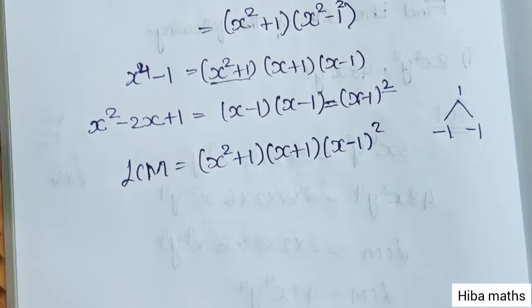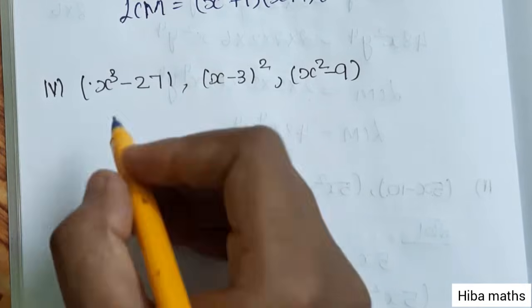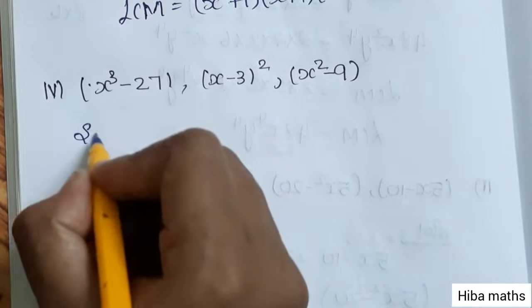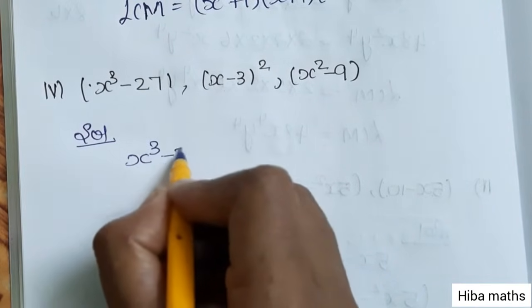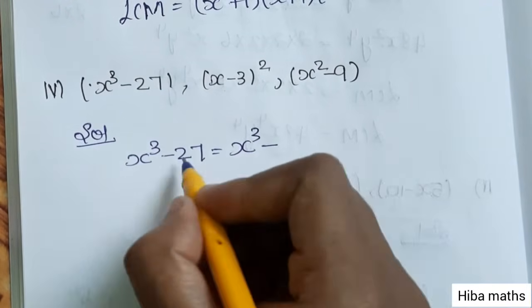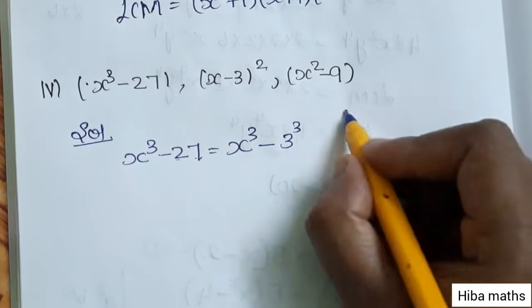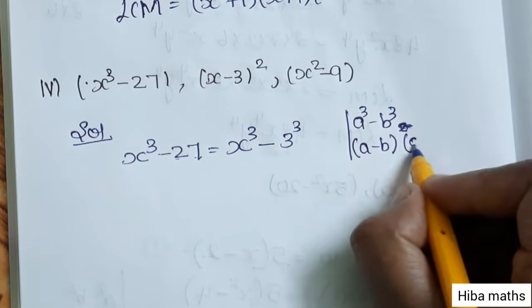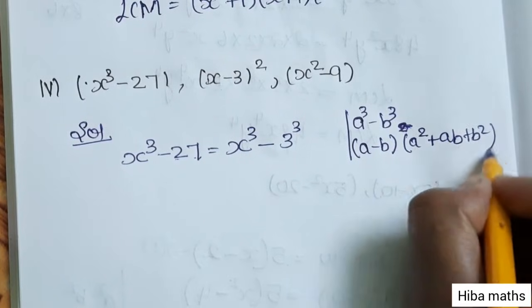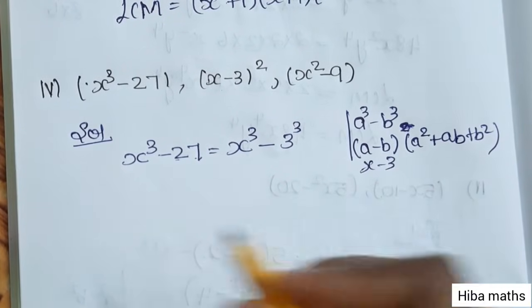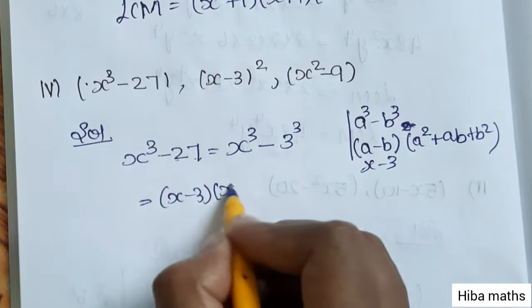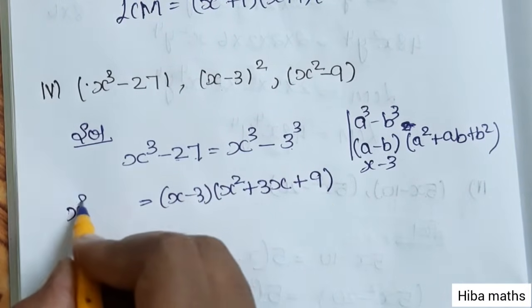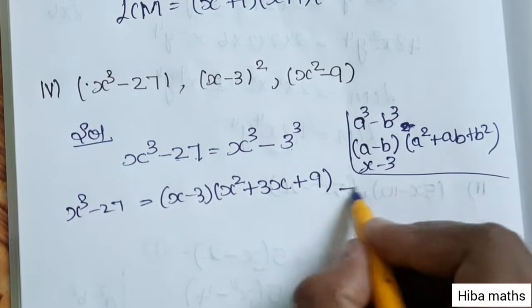Fourth subdivision: x³ minus 27, (x-3)², and x² minus 9. For x³ minus 27, we write it as x³ minus 3³. Using the a³ minus b³ formula = (a-b)(a²+ab+b²), we expand to get (x-3)(x²+3x+9). This is the first expression factored.